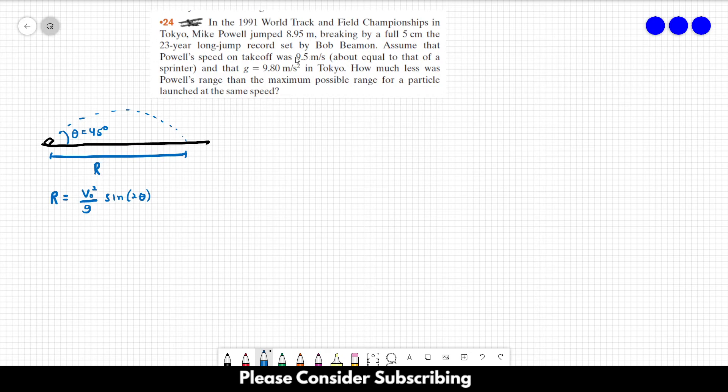We know that the velocity is 9.5 and we know gravity, and the angle for the maximum reach would be when the angle is 45 degrees. So in our case, the maximum possible range would be R equals 9.5 squared over 9.8 times the sine of 2 times 45.